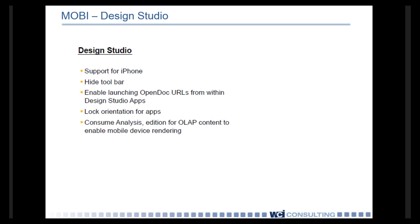In Design Studio, the support for mobile has been increased to iPhones, where you can hide the toolbars. You can also enable launching OpenDoc URLs to other Webi documents, Dashboard documents, or Crystal documents within Design Studio. You can also lock the orientation for apps so that you have more control over the user experience, as well as being able to consume more items, including OLAP cubes.